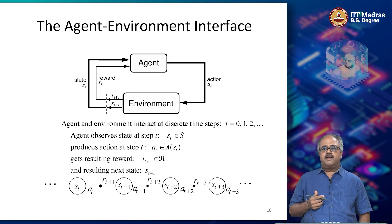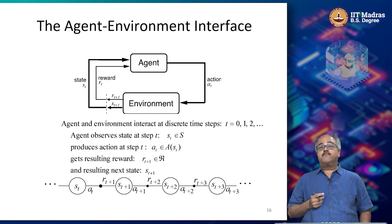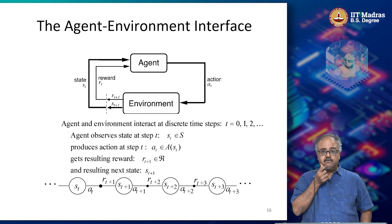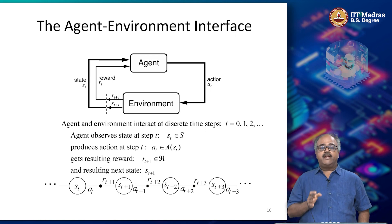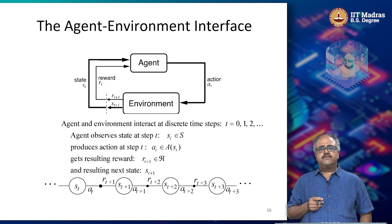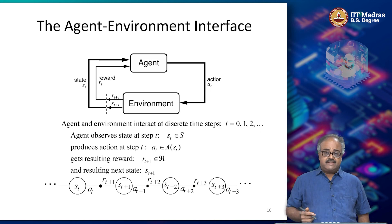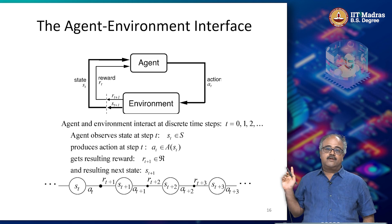Putting everything we have seen so far and also to introduce a little bit more formalism, we are going to define what we call the agent-environment interface, slightly introducing some notations and other things that we use for the rest of the course. The first thing to notice is that there is an agent interacting in a closed loop with the environment.